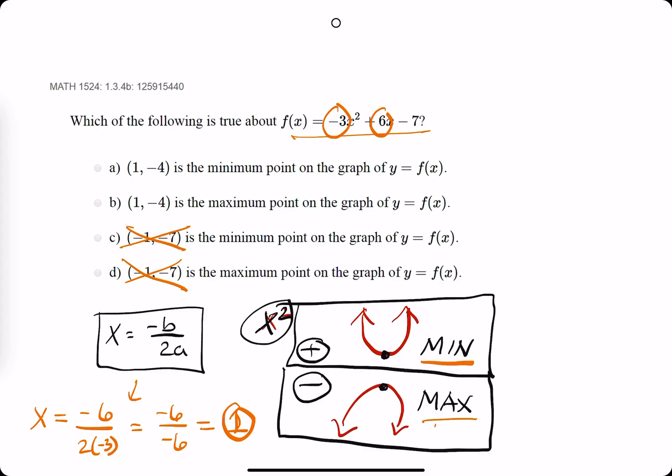So then we want to find out, is it going to be a minimum or is it going to be a maximum? So that's where we look at the a value or the coefficient of the x squared term. In this case, the coefficient is negative 3, which indicates that the x squared term is negative, which means that we will have a facing down parabola, which indicates that we must have a max at the x value of 1, which means b is probably our best bet. Bring out the eraser, find out that b is the correct answer.